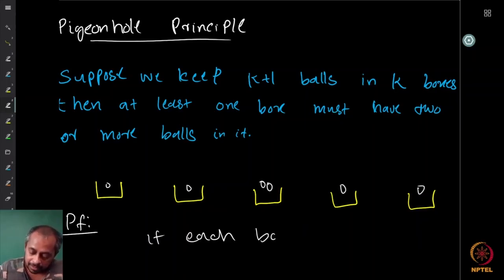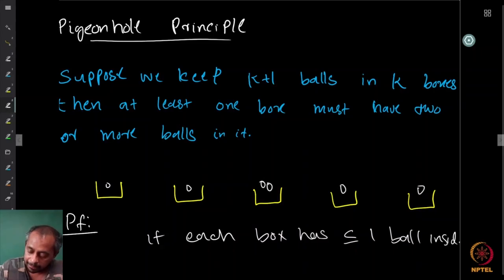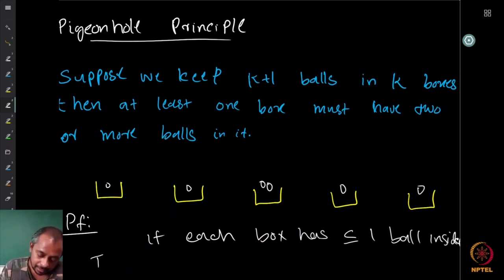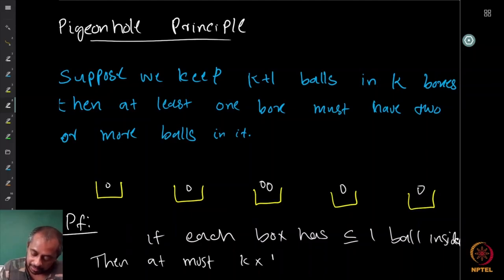This is basically what the pigeonhole principle is. The proof is that if each box has less than or equal to one ball inside, then at most k times one, which equals k balls can be there. So that is the proof.